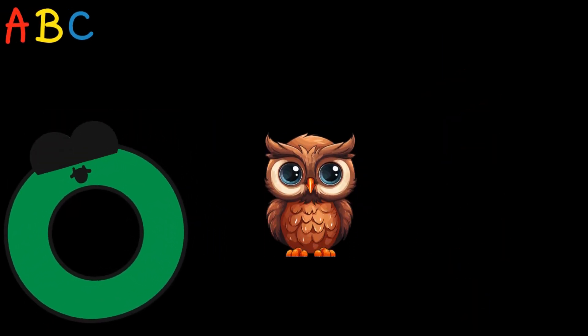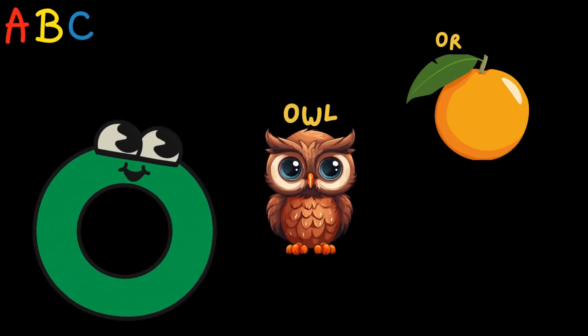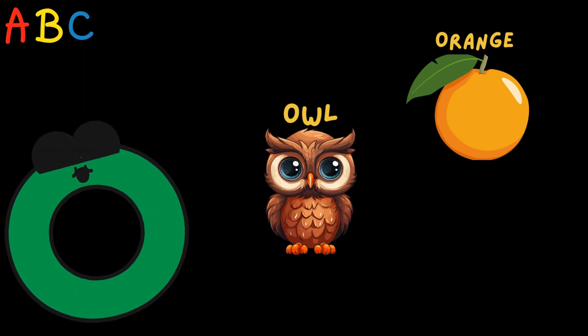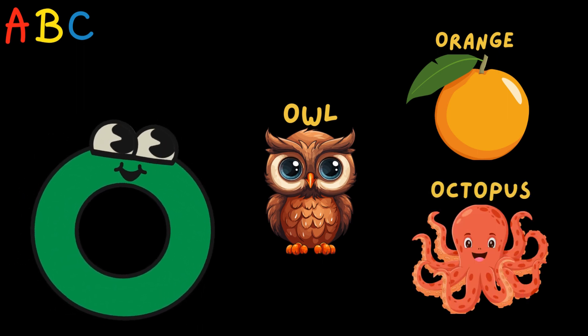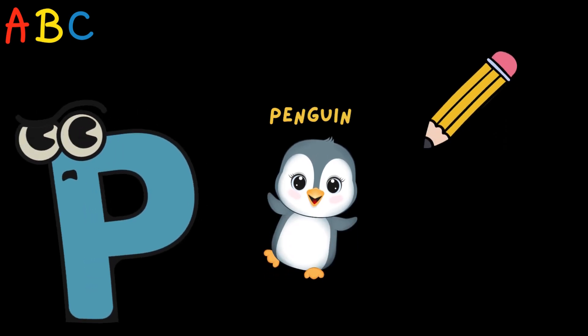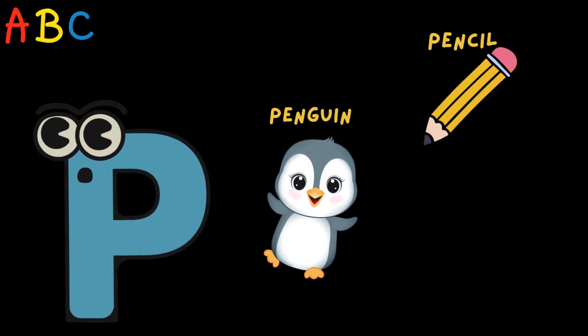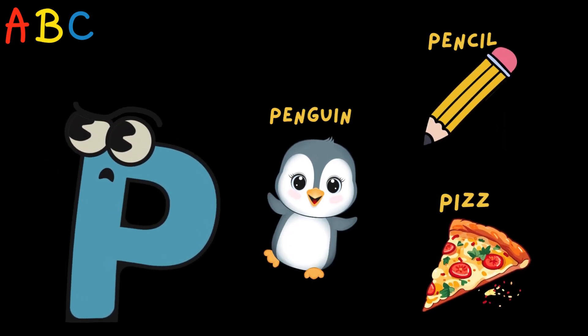O is for Owl, Orange, Octopus. P is for Penguin, Pencil, Pizza.